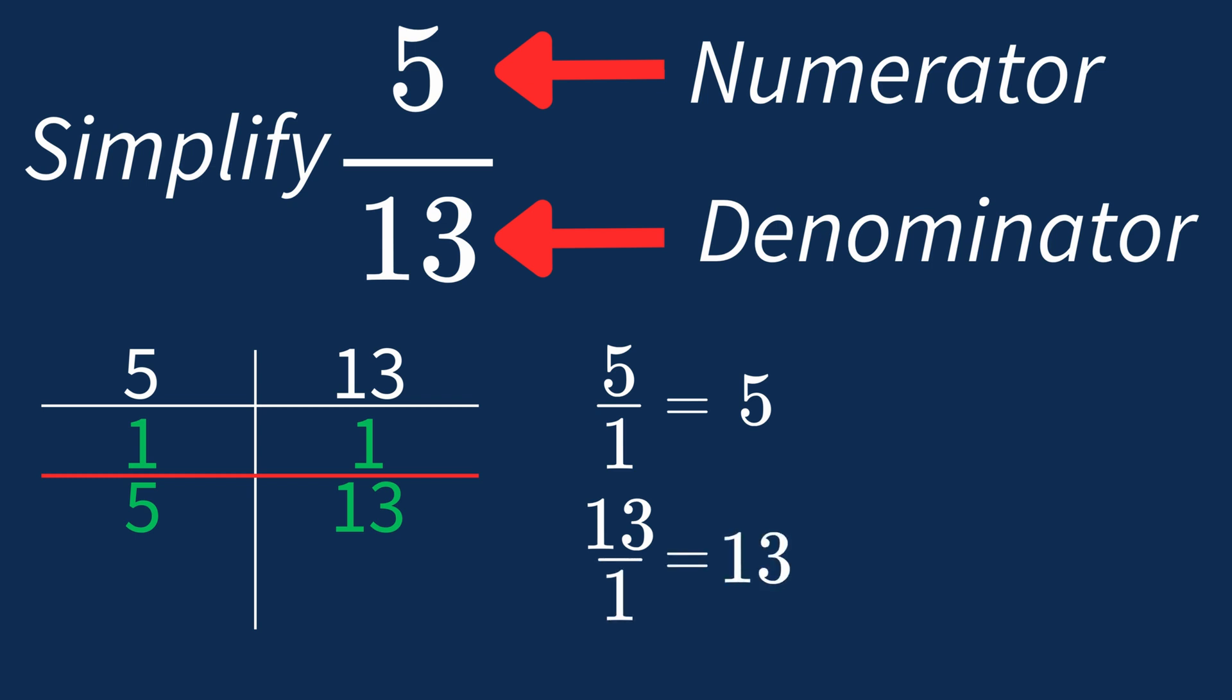So after dividing both the numerator and denominator by their greatest common factor of 1, we end up with the same fraction, 5 over 13. This shows us that 5 over 13 is already in its simplest form.